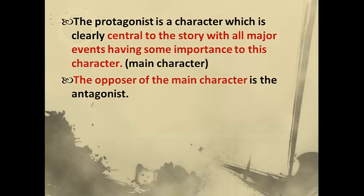The opposer of the main character is the antagonist. The antagonist opposes the main character. This can be another person or character, or it can be a situation, or it can be an object. The antagonist is not always a character. In The Boy in the Striped Pajamas, the antagonist we think is Lieutenant Coulter, but it's not really — the antagonist is the persecution of the Jews keeping the two boys apart. It's a situation. But in The True Confessions of Charlotte Doyle, the antagonist of Charlotte is clearly Captain Jaggery. So sometimes it's a character, sometimes it's a situation.